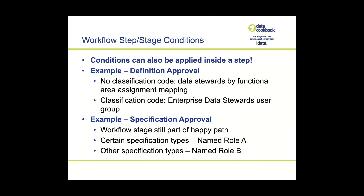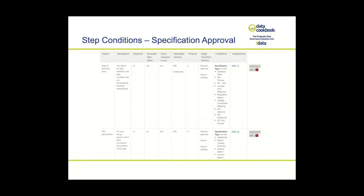Here's an example for specification approval. There's a stage where the specification needs to be assigned to one group or another based on the type of specification. In the first step there's a list of seven specification types, and in the second step a list of five or six more. The condition is applied to both steps so that depending on the specification type, one group receives the notification and does the work.